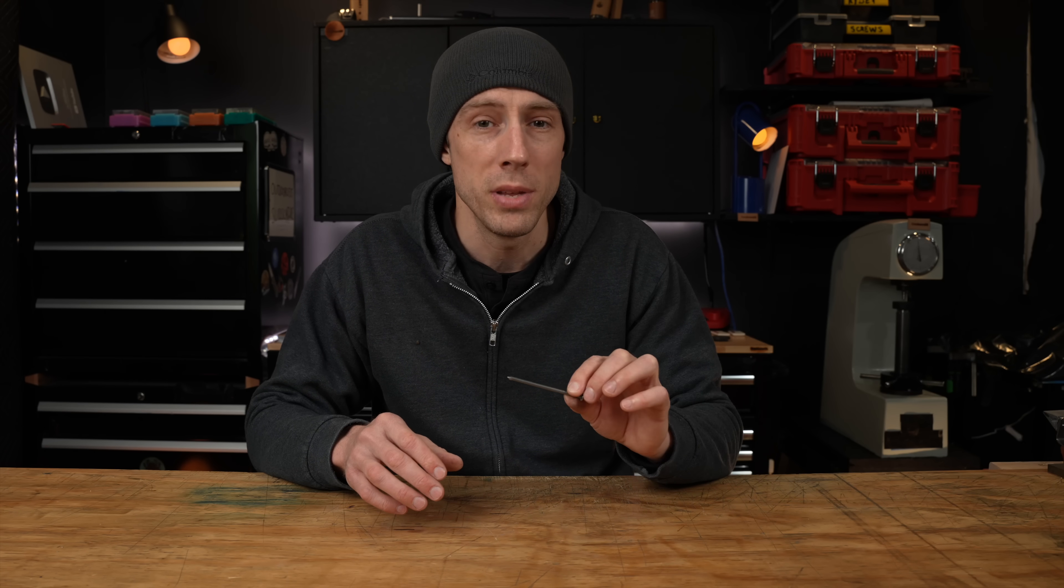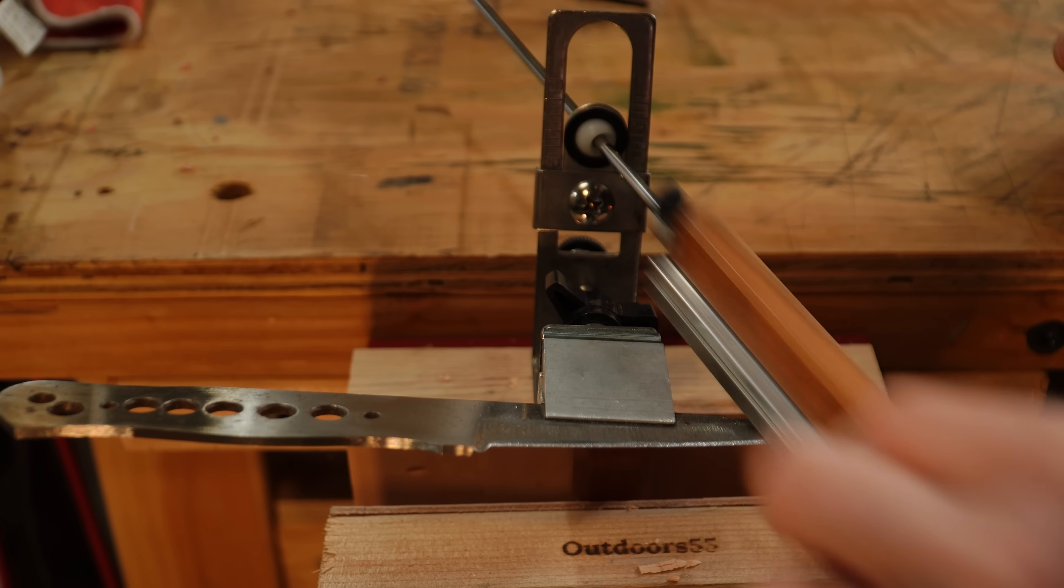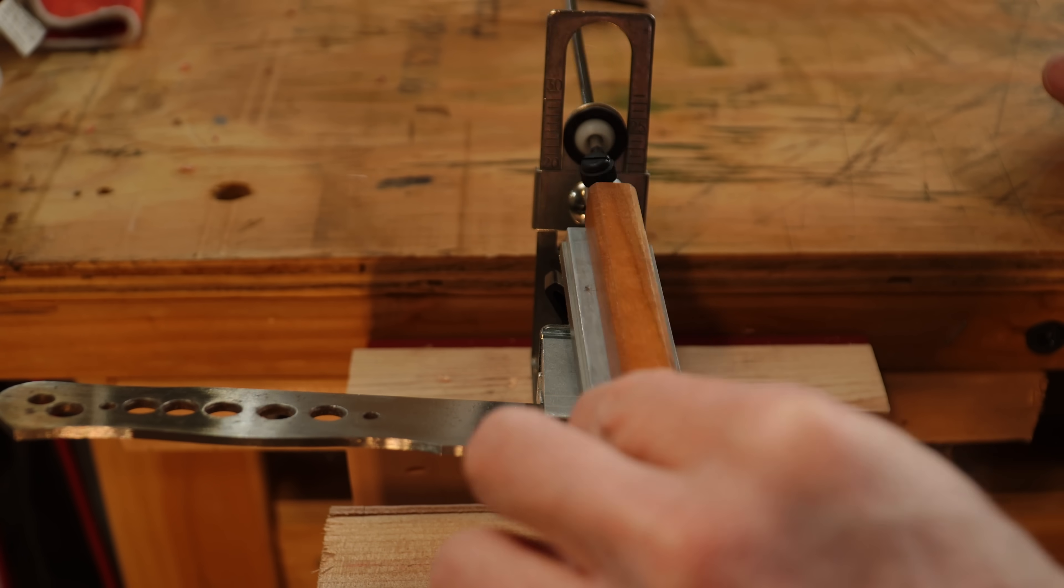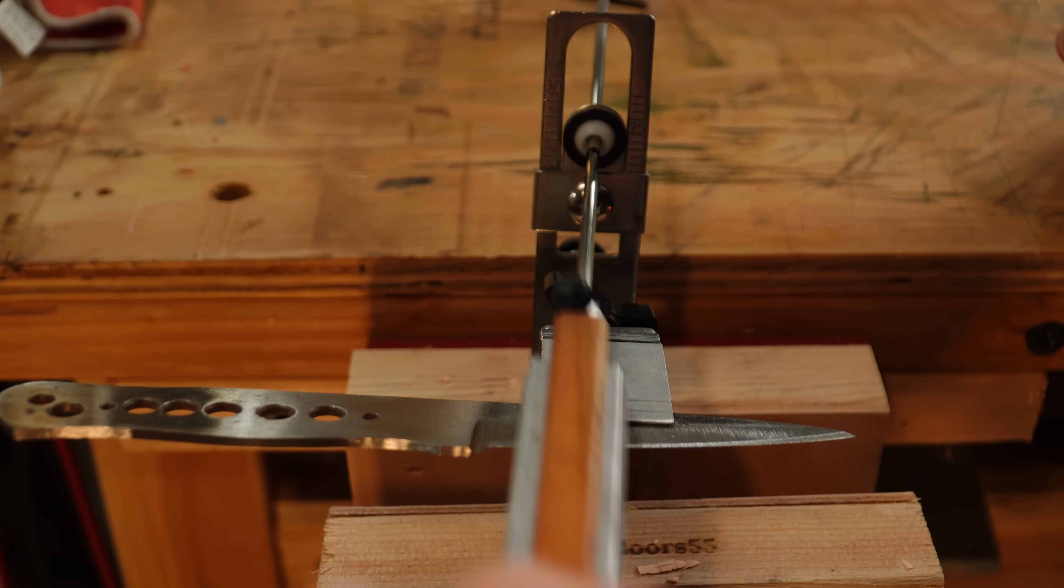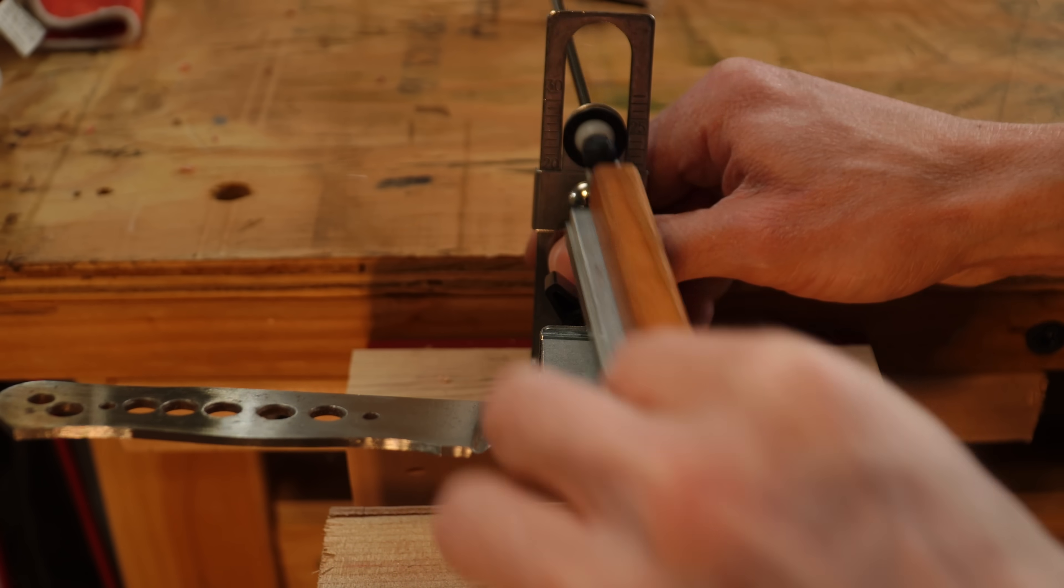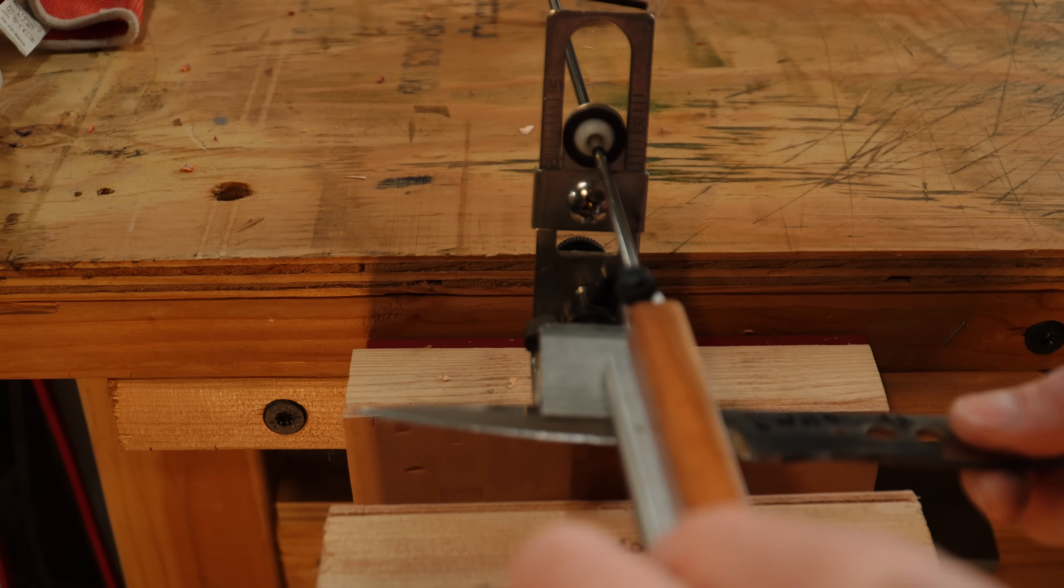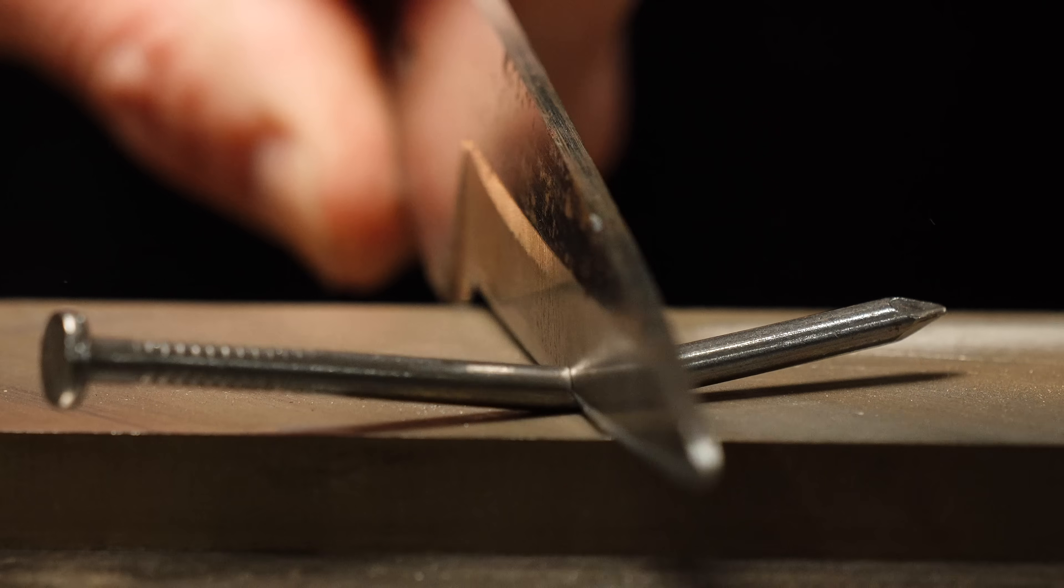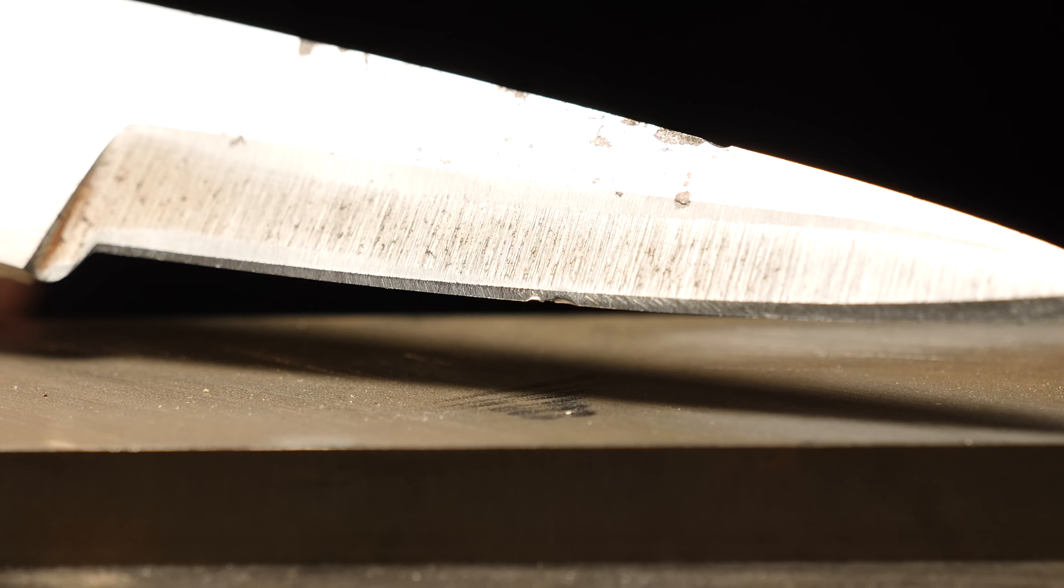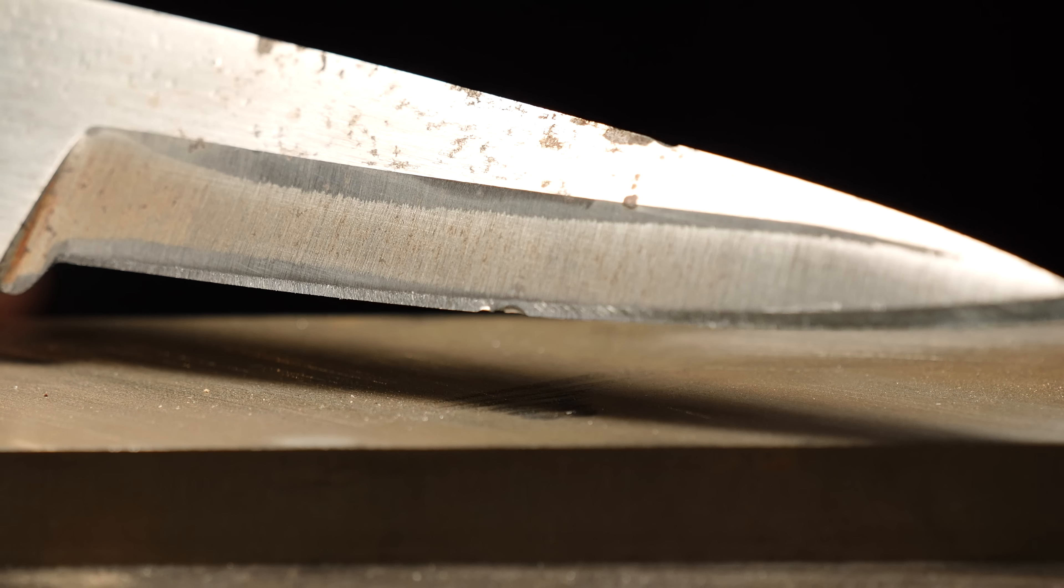So the first test we're going to do here is with an A2 tool steel test blade I made several years ago. It is sitting right at around 64 HRC, and I'm putting a 20-degree per side bevel angle on the knife using the KME. I then hammer this edge through the nail, and what do you know, we have some pretty serious edge damage. What a crap steel and heat treatment.